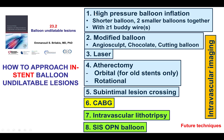Briefly, this involves high-pressure balloon inflations, often with plaque modification balloons. It can involve laser with contrast injection simultaneously, rarely atherectomy, and in even more rare cases, subintimal lesion crossing. Intravascular lithotripsy is increasingly being performed in this setting, and in Europe there is also a very high-pressure balloon that can be used to expand stents.